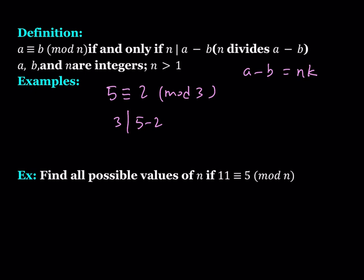You can write it like a minus b equals n times k, where k is an integer. We can also write another statement which will be true as well. For example, 4 is congruent to negative 1 mod 5 — and we're going to be using negative numbers as well. This is also true because 5 divides 4 minus negative 1. Here we have to be careful — we're subtracting a negative number.